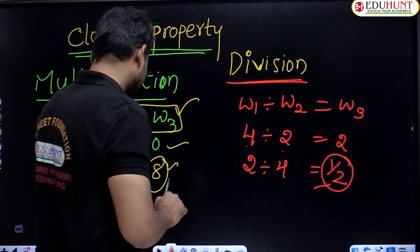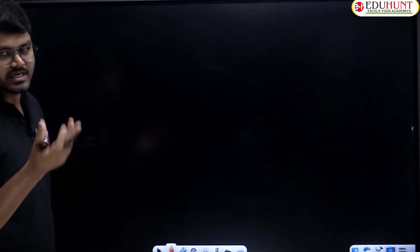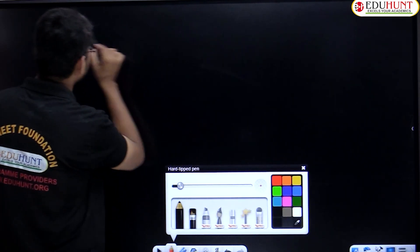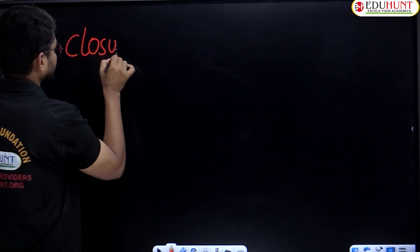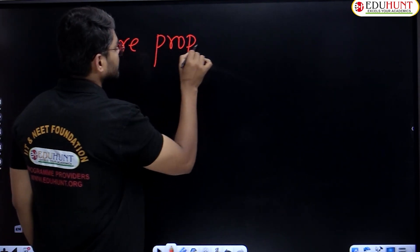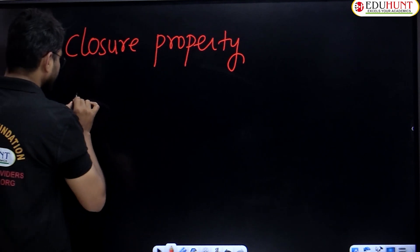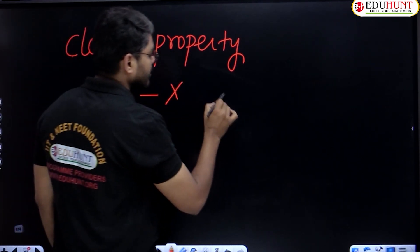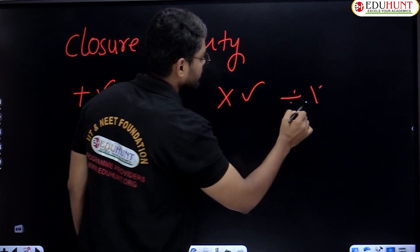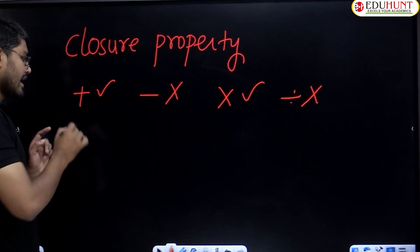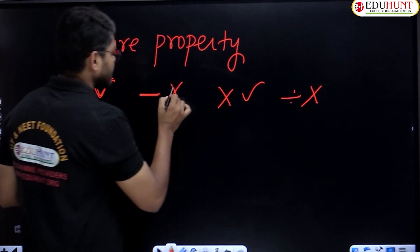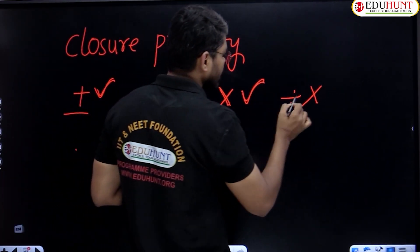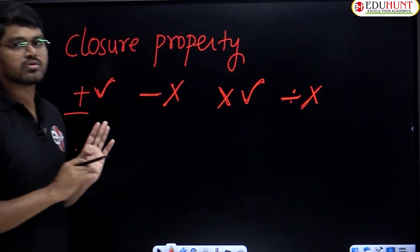So let us revise closure property. In closure property: addition — holding; subtraction — not holding; multiplication — holding; division — not holding. This you have to remember.